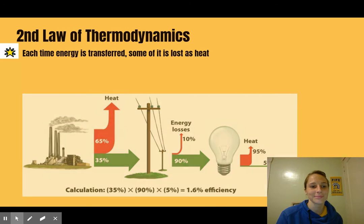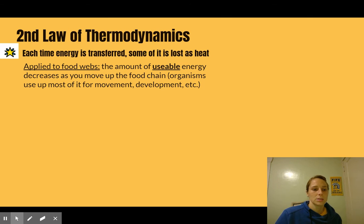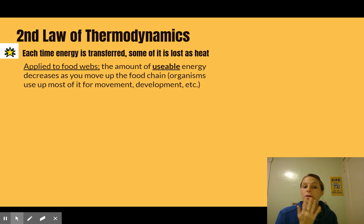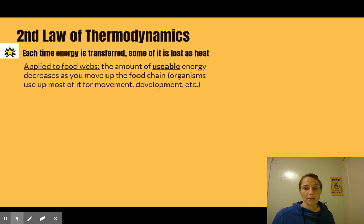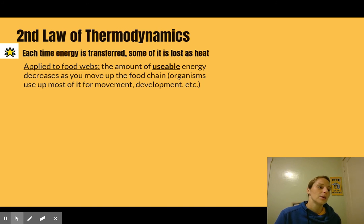With this law of thermodynamics, we can apply it to food webs. The amount of usable energy decreases as you move up the food chain because organisms lose energy in the form of heat. Think about yourself — your body works hard to maintain 98.6 degrees, releasing heat through cellular respiration. When you're moving or exercising, you release even more heat. So if a bear were to eat you, you've already lost a lot of that energy as heat, which means there's less for the bear to get.